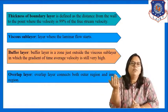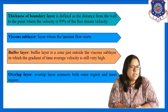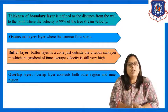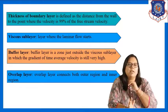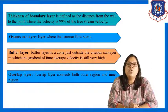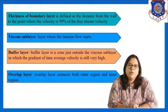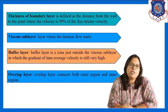The three layers are: first, the viscous sub-layer, which is the layer where laminar flow starts. Above that is the buffer layer, which is the zone just outside the viscous sub-layer in which the gradient of time-average velocity is still very high. The last layer is the overlap layer, which connects both the outer region and the inner region. These are the different layers that exist in boundary layer formation over a flat plate.